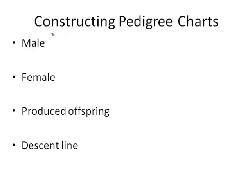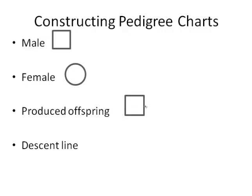Males are drawn as squares, and females are drawn as circles. When a male and a female produce offspring, we use a horizontal line between the two. The next part looks at the descent line — the offspring of a male and female — shown by a vertical line down from the center.